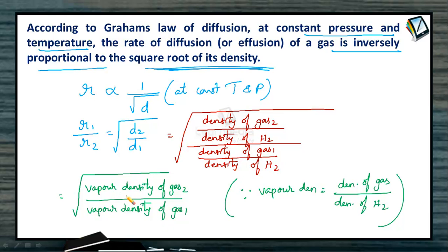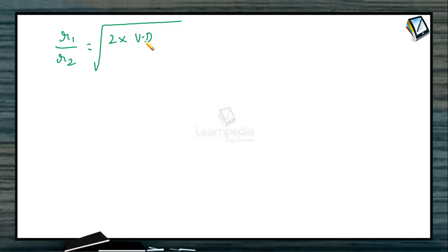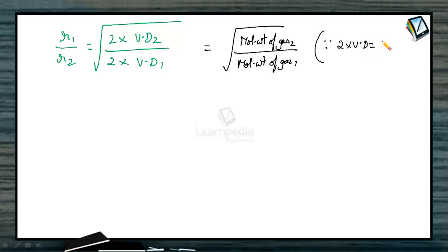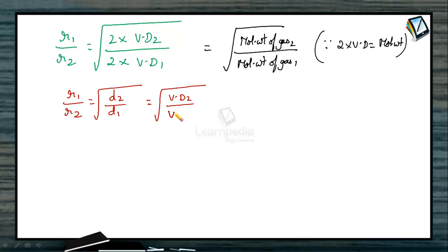When we multiply the vapor density of both gases by 2, we get R1/R2 = √[(2 × VD2) / (2 × VD1)]. Since 2 × vapor density equals molecular weight, we can write R1/R2 = √(M2/M1). So the complete relation is: R1/R2 = √(D2/D1) = √(VD2/VD1) = √(M2/M1).